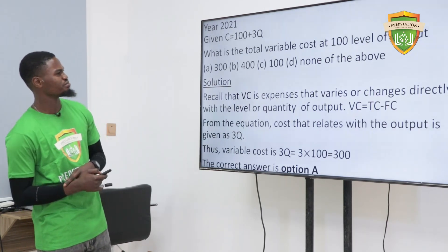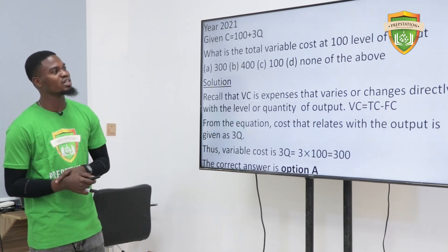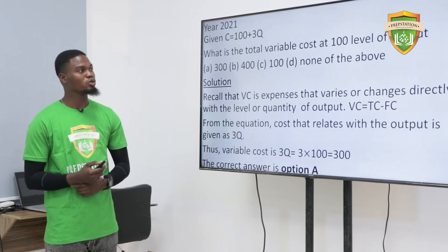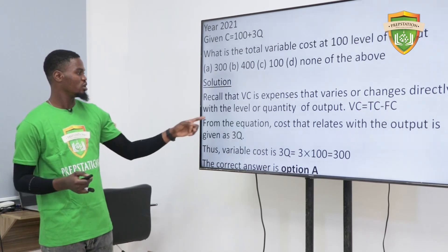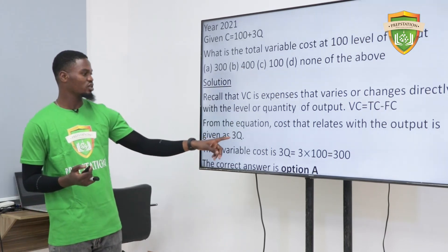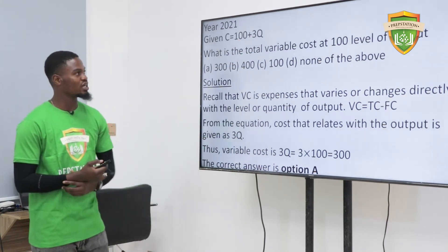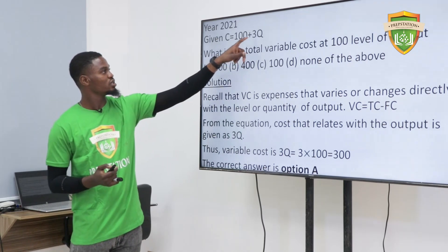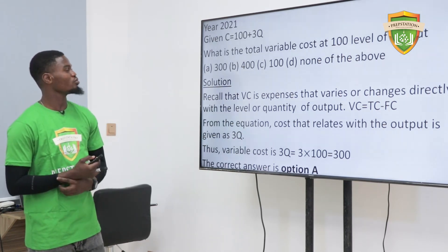Here in year 2021, what is the total variable cost at 100 level of output? We know that our fixed cost is 100. Variable cost is expenses that vary or change directly with the level of quantity. So the level of quantity will be given as 3q. We multiply 3q by the quantity — 3 times 100 gives you 300, which is your option A.